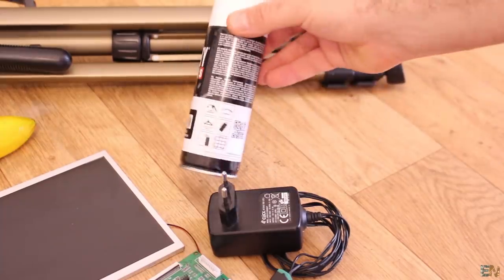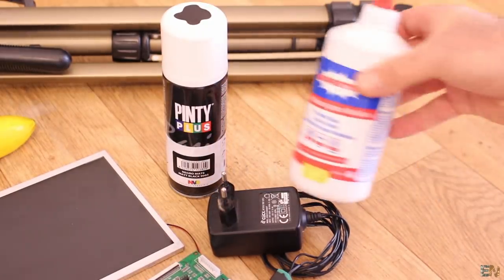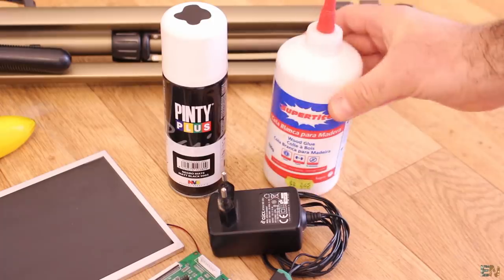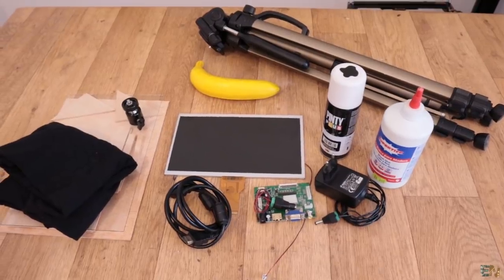Oh yes, maybe also some black paint so we can give this prompter a better look and we will also need some white glue. Ok guys, so let's start.